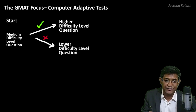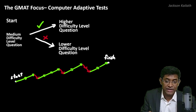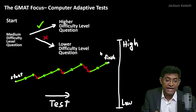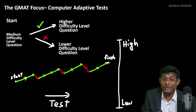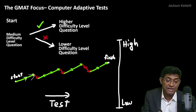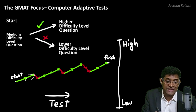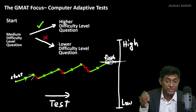To understand this, imagine the exam progress on the x-axis and difficulty level of questions on the y-axis. If you get your first question right, the difficulty moves up; if you get the next one right again, it increases further; if you get one wrong, the difficulty goes down. Once you finish the exam, the level you reach determines your final GMAT score.